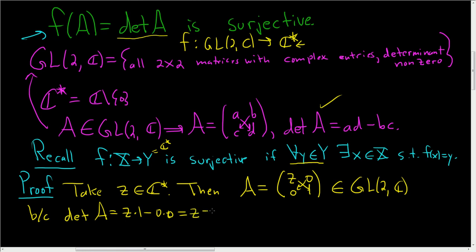So that's going to be z. And z is not 0 because it's in this set. So that's why A is here. So we showed this part.